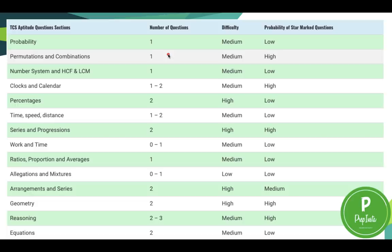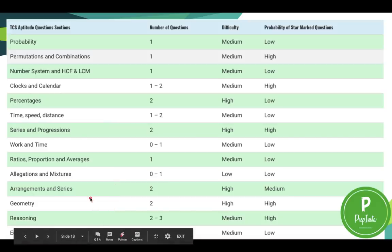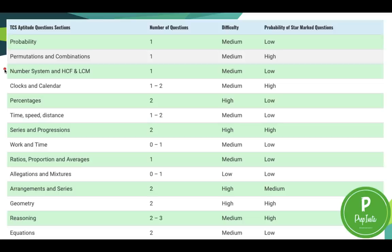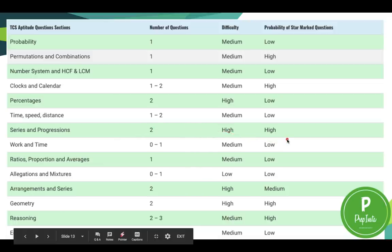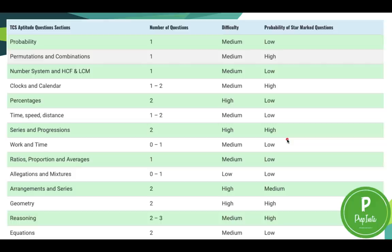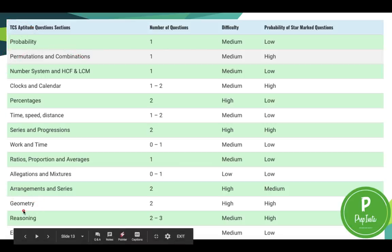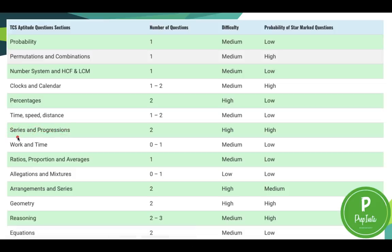Topics in the TCS aptitude section include: probability, permutation and combination, number systems, HCF and LCM, clocks and calendars, percentages, time-speed-distance, series and progressions, work and time, ratio-proportion-averages, allegation and mixtures, arrangements and series, geometry, reasoning, and equations. The advanced questions are mostly from permutation and combination, probability, geometry, equations, and series and progressions. Aim to solve at least 17 to 18 questions in the aptitude round to clear both TCS and TCS Digital.